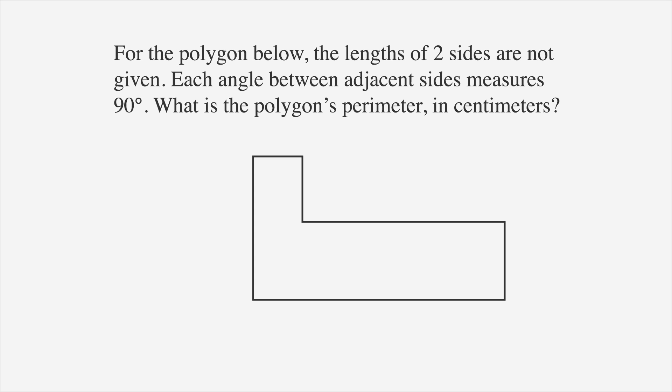For the polygon below, the lengths of two sides are not given. Each angle between adjacent sides measures 90 degrees. What is the polygon's perimeter in centimeters? Ready, set, pause.